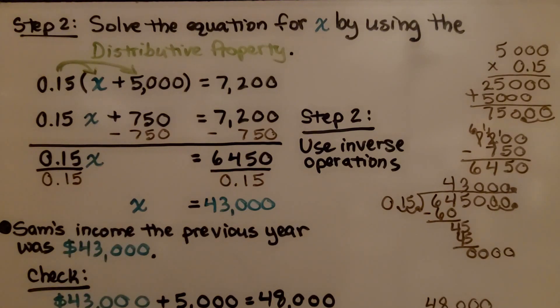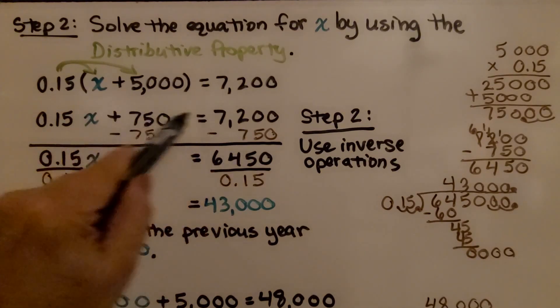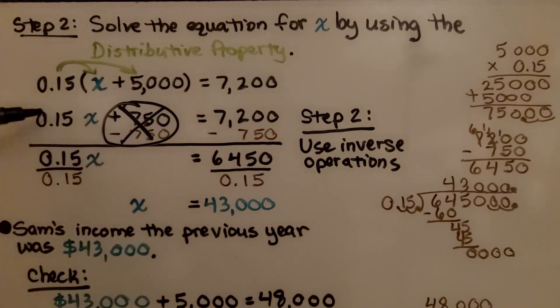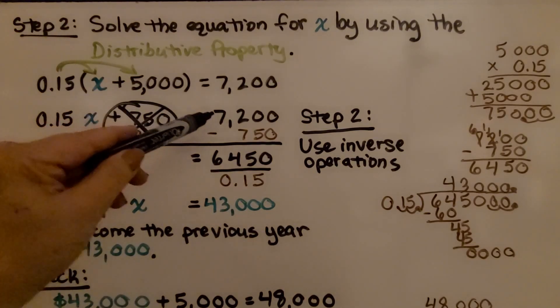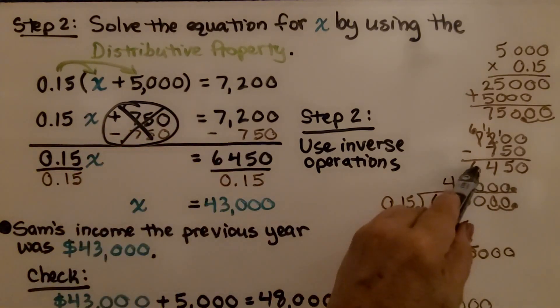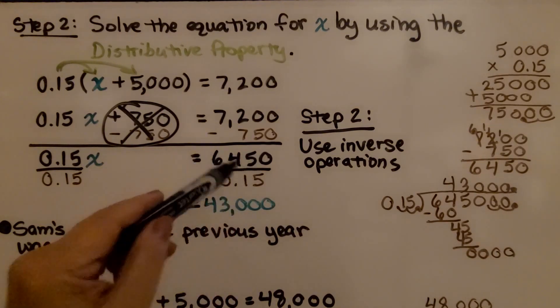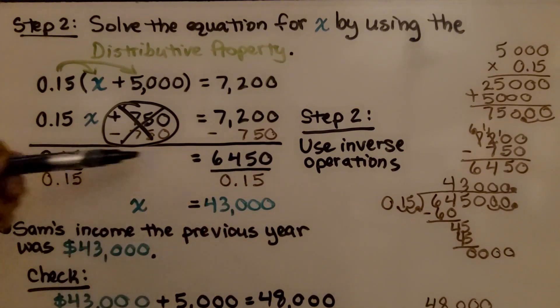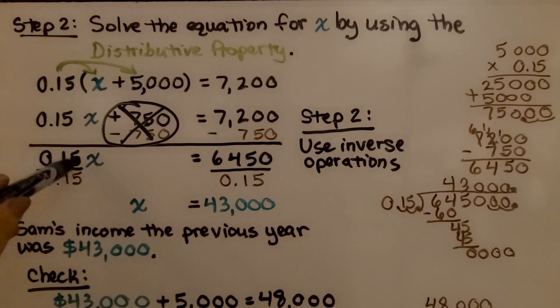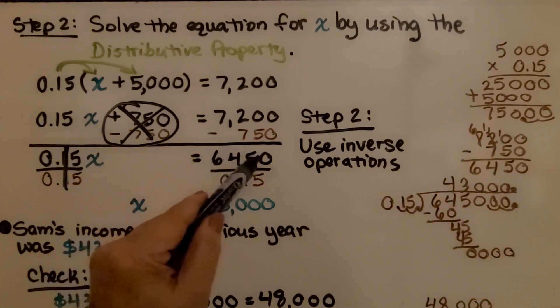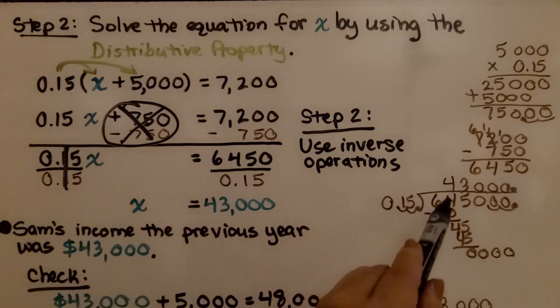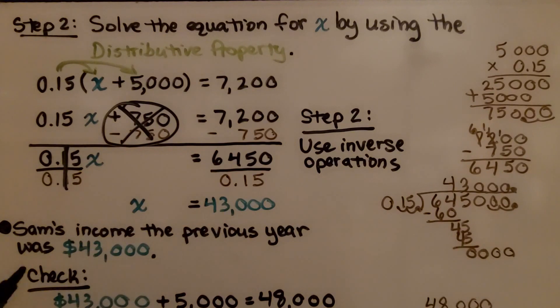Step three is we use inverse operations. We want to get that x to one side of the equation. We have a plus 750, so we minus 750 from each side. That creates a zero pair and eliminates this. We drop down the 0.15x, and here we have 7,200 minus 750, which gives us 6,450. Our equation is 0.15x equals 6,450. We divide both sides by this coefficient 0.15. When we do 6,450 divided by 0.15, we get 43,000. That means Sam's income the previous year was 43,000.